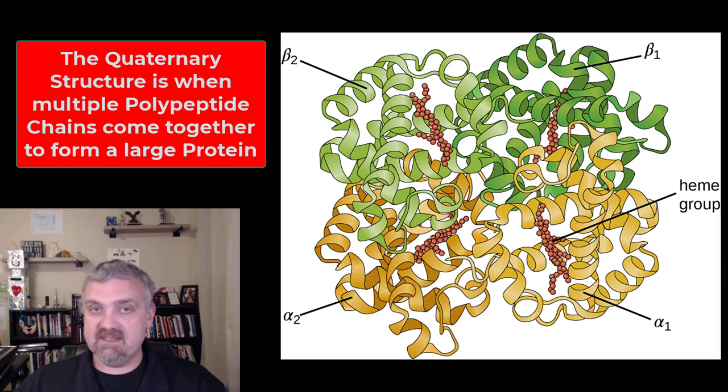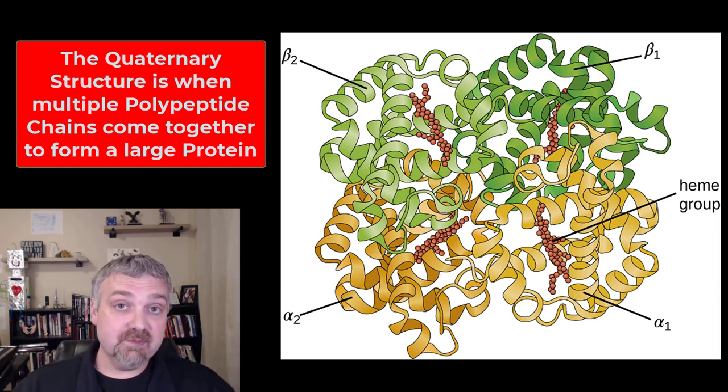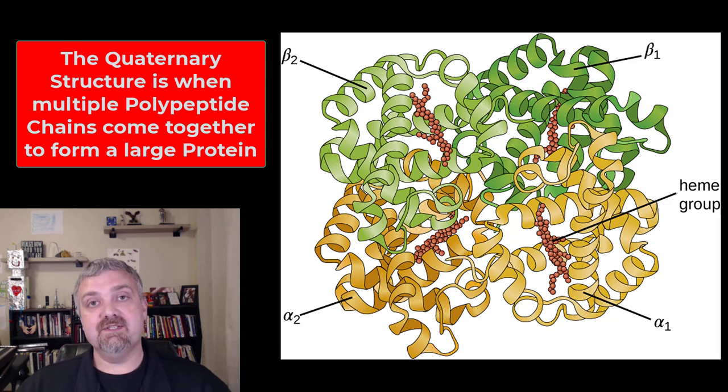So primary structure: sequence of amino acids. Secondary structure: local changes in shape. Tertiary structure: the three-dimensional shape of a polypeptide. Quaternary structure: when you need to put more than one polypeptide chain together to form a larger complex protein. That's the structure of proteins and how important it is to their function. I hope this helps. Have a wonderful day, be blessed.